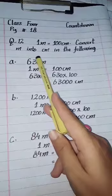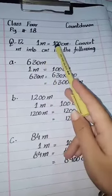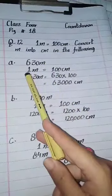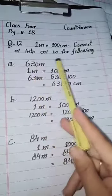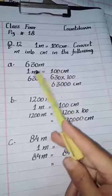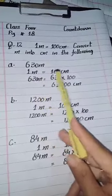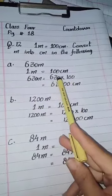Part a: 630 meters. Now we have to change 630 meters into centimeters. We know that 1 meter equals 100 centimeters, and if we want to change meters into centimeters, we will multiply 630 by 100.